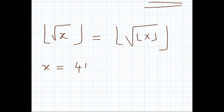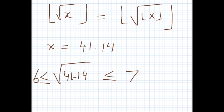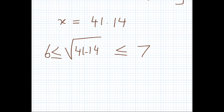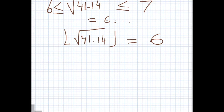To see what this means, take x = 41.14. The square root of 41.14 is somewhere between 6 and 7, since the square root of 36 is 6 and the square root of 49 is 7. So the floor of the square root of 41.14 equals 6, since it's 6-point-something.